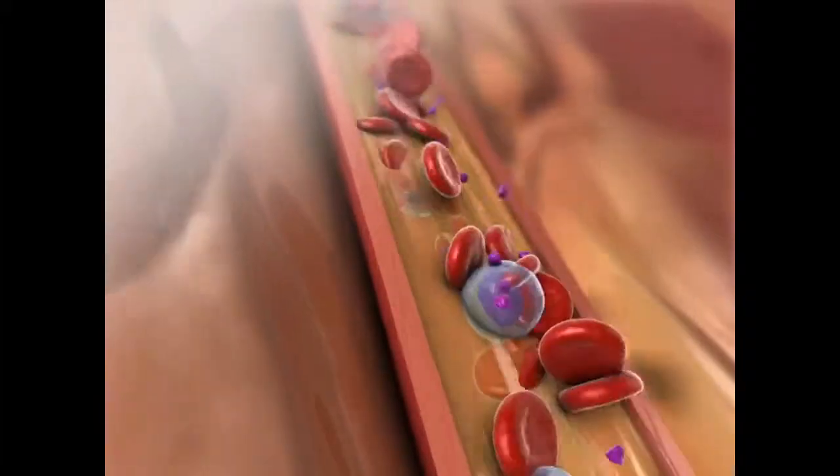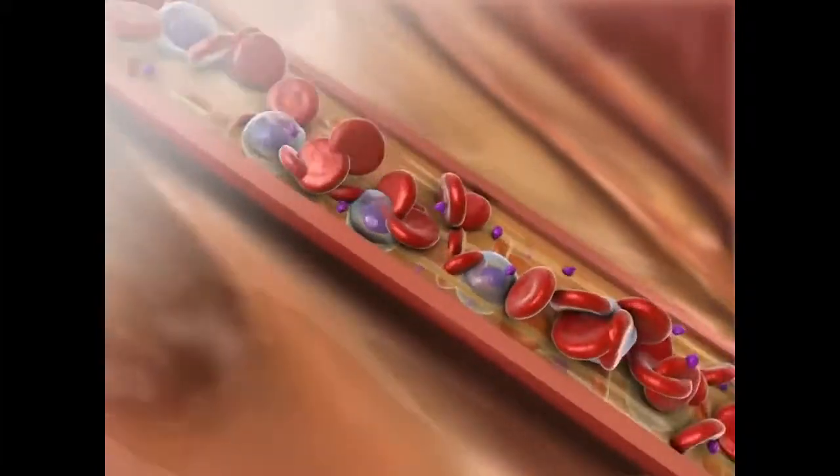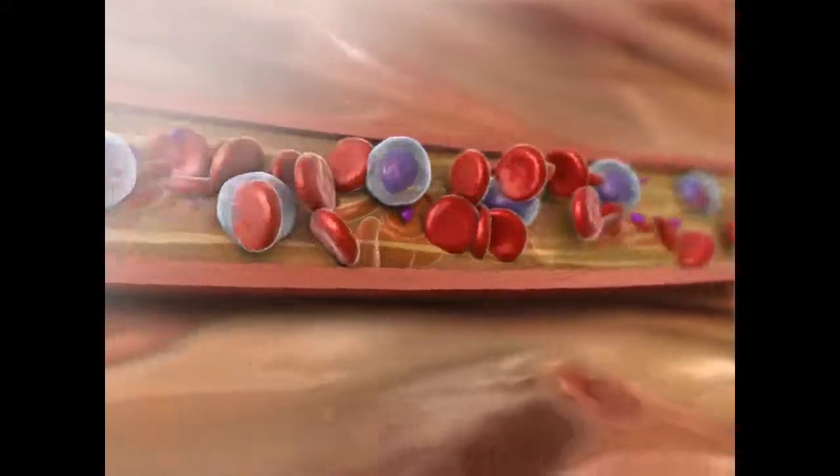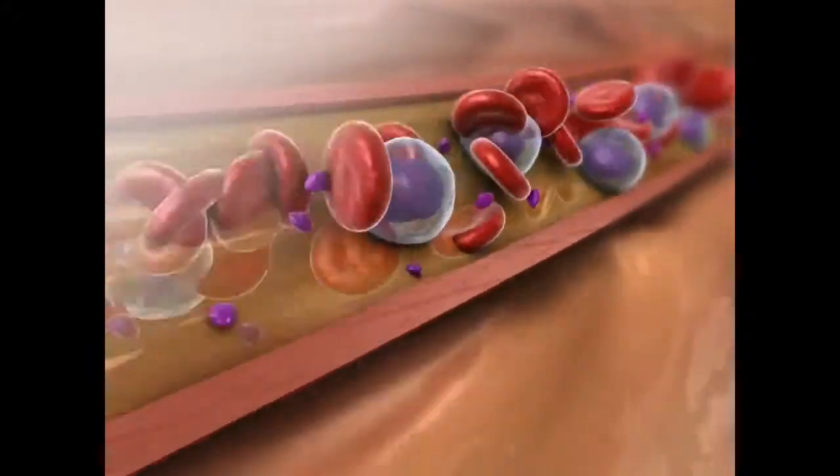The largest component of blood is plasma, a yellowish liquid that is 90% water. Plasma carries suspended blood cells and other substances.